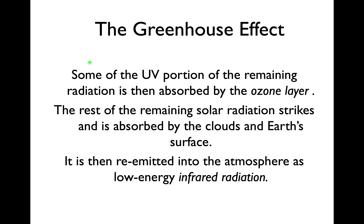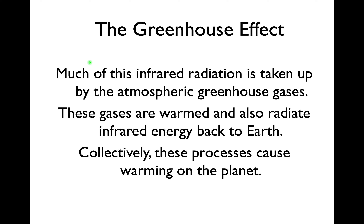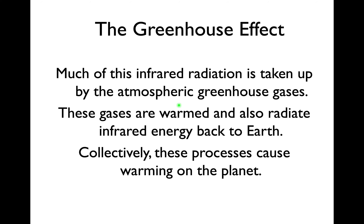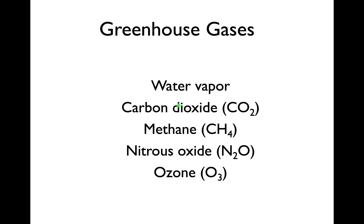One thing to note: the ozone layer is part of this system. We talked about the ozone layer absorbing high-energy UV radiation that is harmful to us. So the ozone layer is part of the greenhouse gases, though it doesn't absorb all incoming radiation. You can pause and read the specifics on the slide, or check the PowerPoint when I upload it.